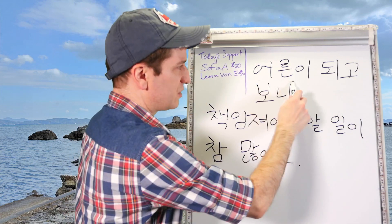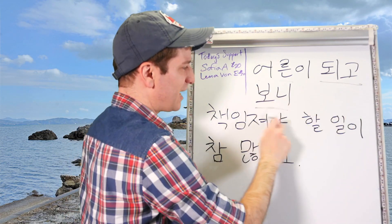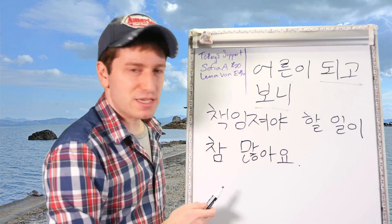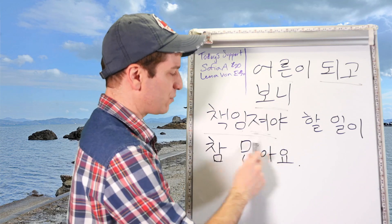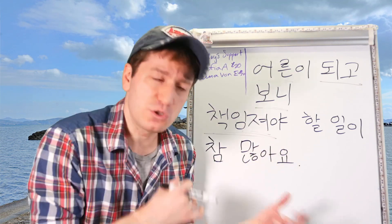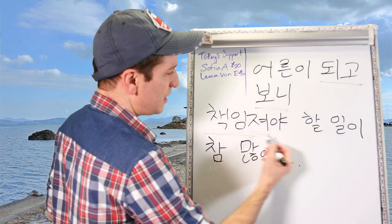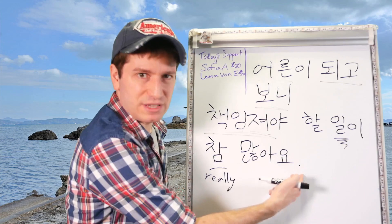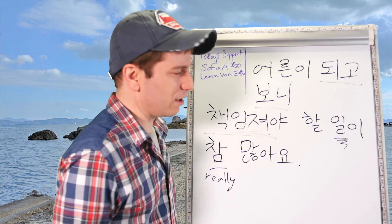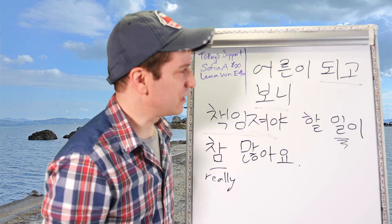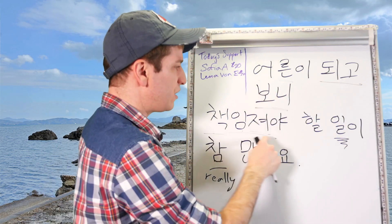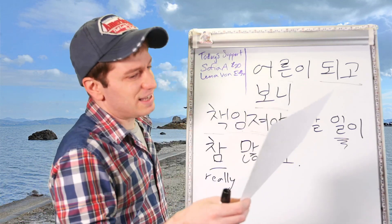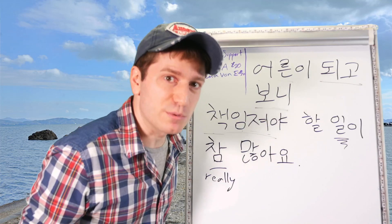어른이 되고 보니 — 어른 means an adult. So after I became an adult, I realized: 책임 is responsibility, 지다 is to have a responsibility, so 책임 줘야 하다 means to have to be responsible for. 책임 줘야 할 일 — things I have to be responsible for. 참 많아요 — there are really a lot. So: after becoming an adult, I realized there are a lot of things I have to be responsible for. 어른이 되고 보니 책임 줘야 할 일이 참 많아요.